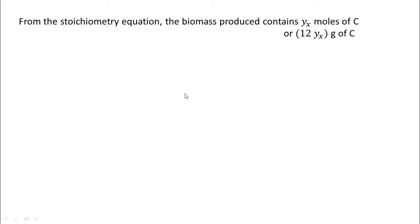We know that if we multiply moles by the molecular mass, we get grams. Therefore, Y_x moles of C is 12 times Y_x grams of C. If the mass fraction of carbon in biomass is 0.5, that is what we have been asked to assume in this problem. The biomass produced is 12Y_x by 0.5.